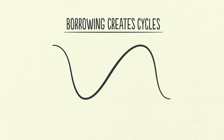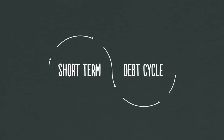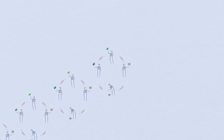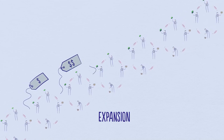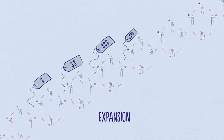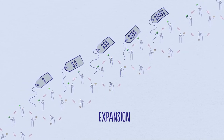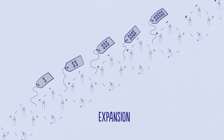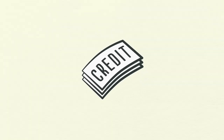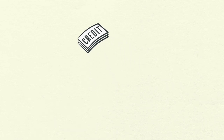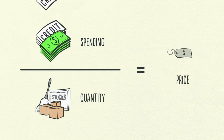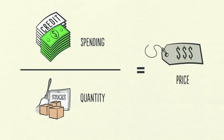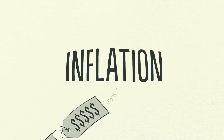This leads us into the short-term debt cycle. As economic activity increases, we see an expansion — the first phase. Spending continues to increase and prices start to rise. This happens because the increase in spending is fueled by credit, which can be created instantly out of thin air. When the amount of spending and incomes grow faster than the production of goods, prices rise — we call this inflation.